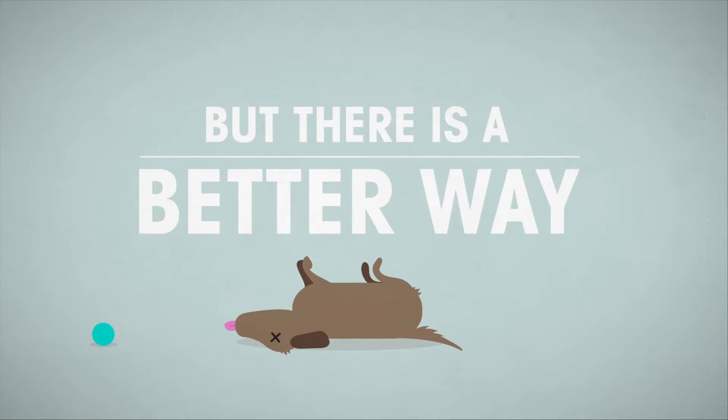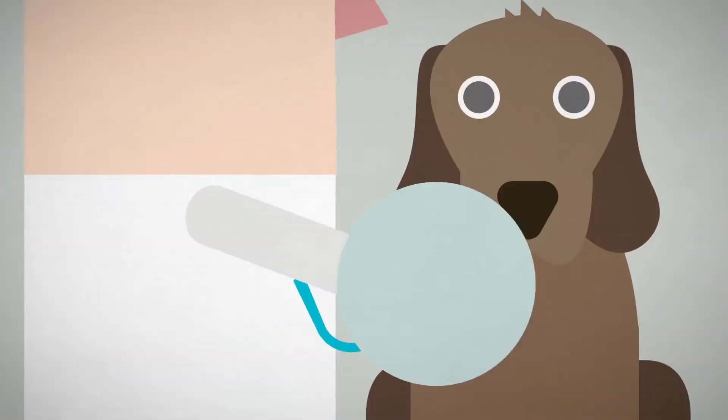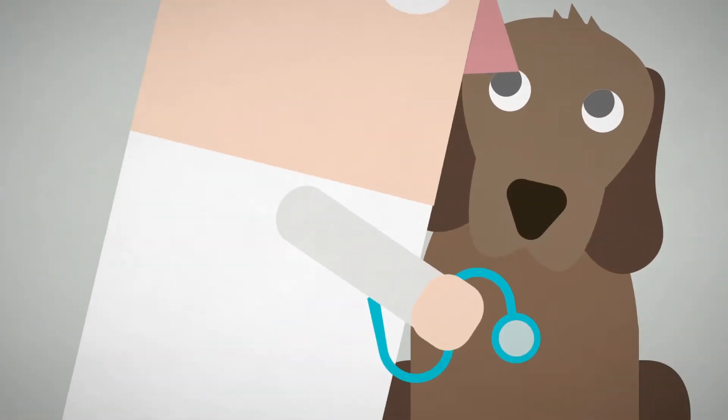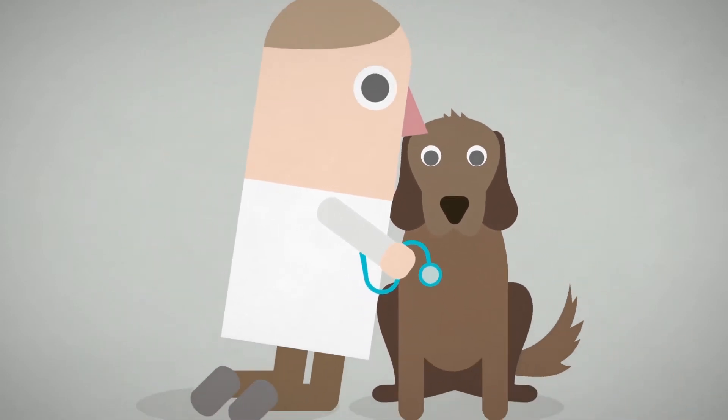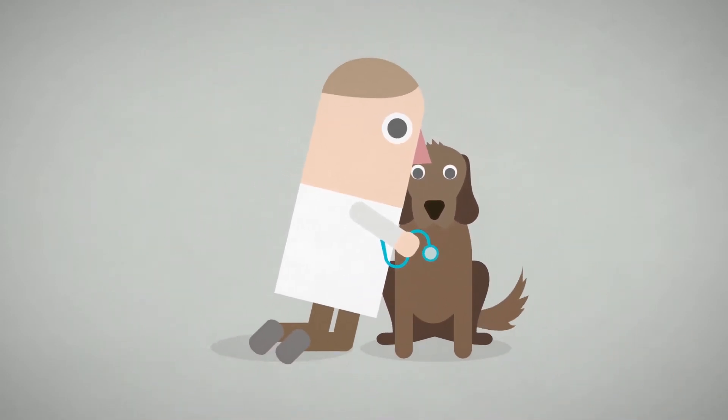But there is a better way. Vaccinating dogs against rabies reduces rates of the disease in people, meaning the dogs and people of India can live safely together.